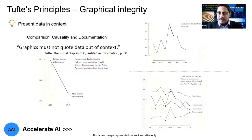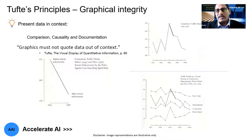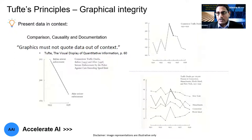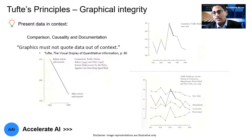Another aspect of graphical integrity is about presenting the data in context. This is an example of Connecticut traffic deaths from 1951 to 1959. On the top you would see it's just about one city — yes there is a trend, but we don't really make much of it on its own. The graphics has to have data in context. When you look at the bottom of the picture, similar data is compared with other cities — New York, Massachusetts, Connecticut, Rhode Island. Now if you look at all four, you have a very practical understanding of how they are related, which one is going up or down, and what the trend is. Always ensure there is context when putting data together.